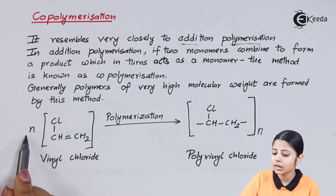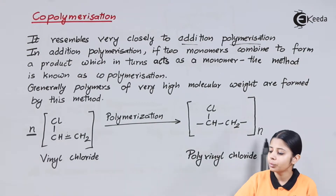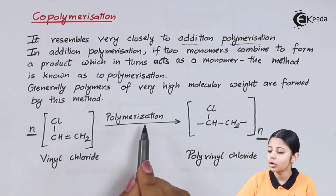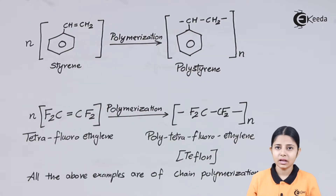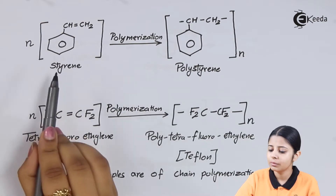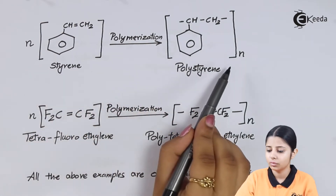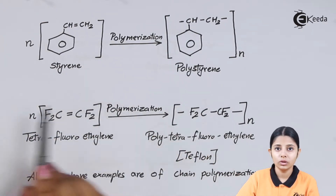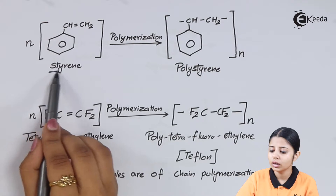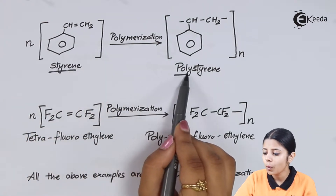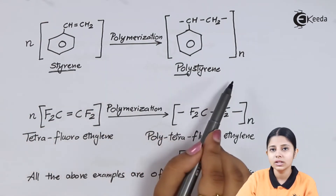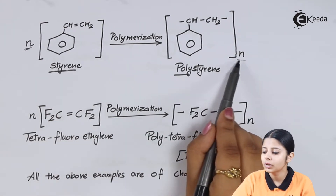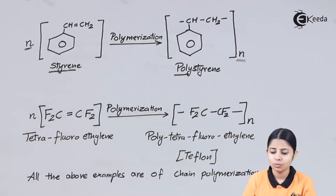On the monomer side we write N in front of the monomer, and on the polymer side N comes down as a subscript. The monomers on polymerization become the polymer. Another example: N times styrene monomer on polymerization becomes polystyrene. Whatever the monomer is, on polymerization it becomes poly- plus the monomer name. On the monomer side N is in front; on the polymer side N comes down as a subscript.